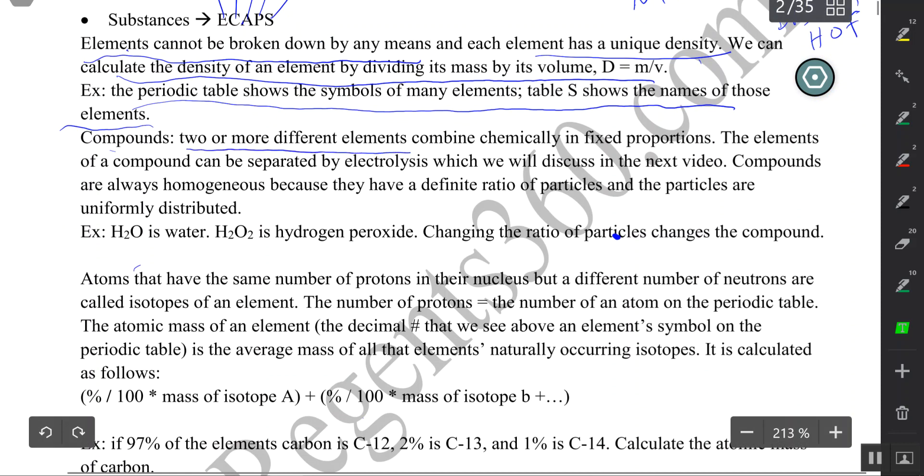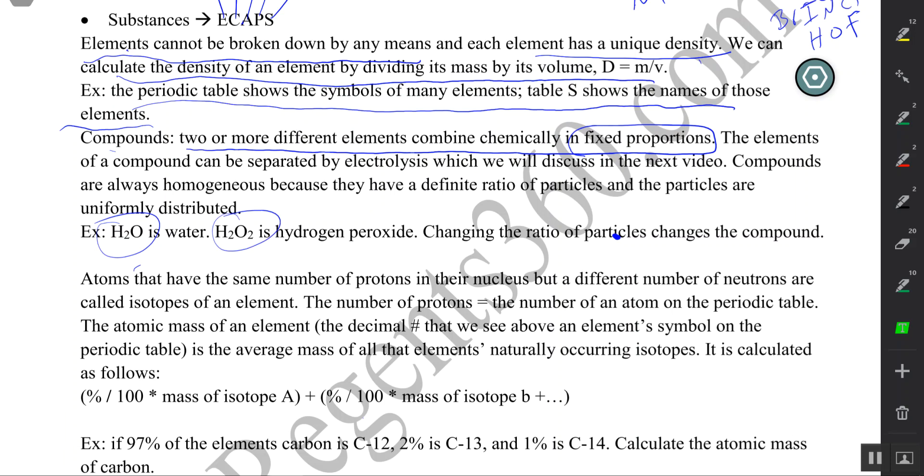Compounds are two or more different elements combined chemically in fixed proportions. Very important that we understand what fixed proportions are. Here's an example: if you want to make water, you need two atoms of hydrogen and only one atom of oxygen to combine together chemically. If you have two atoms of hydrogen and two atoms of oxygen, you will not get water, you'll get hydrogen peroxide. If you drink hydrogen peroxide, you may put your life at risk.